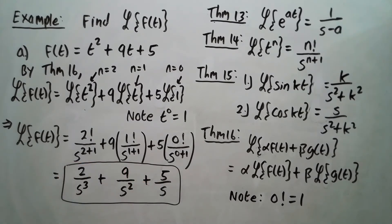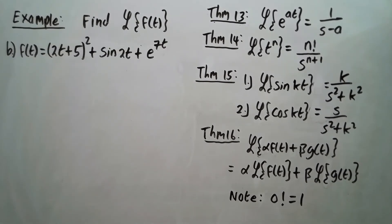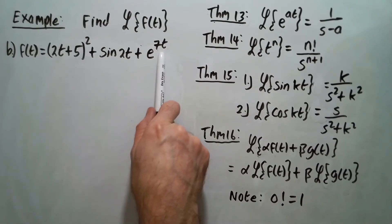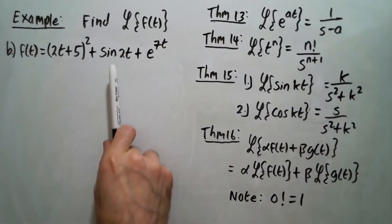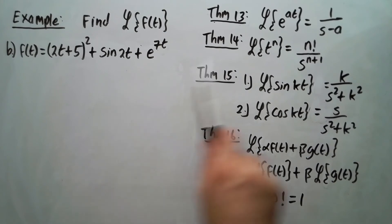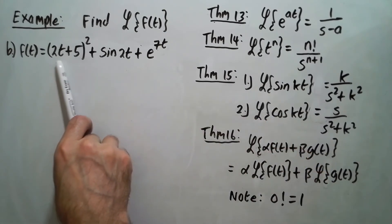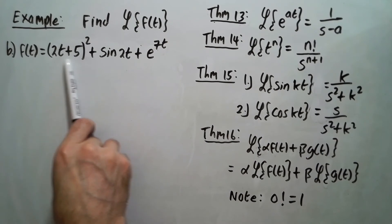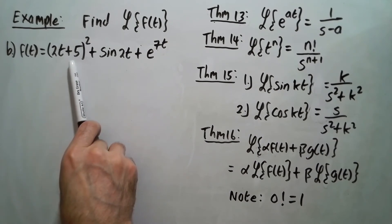Now let's take a look at another example. For part b, say our function is the quantity 2t plus 5 squared plus sine of 2t plus e to the 7t. Looking at the theorems we have, there's one for sine of kt and one for e to the at, and we have Laplace of t to the n. But we don't have 2t plus 5 squared anywhere in our theorems, so the first thing we have to do is expand that expression before we can apply Theorem 14.